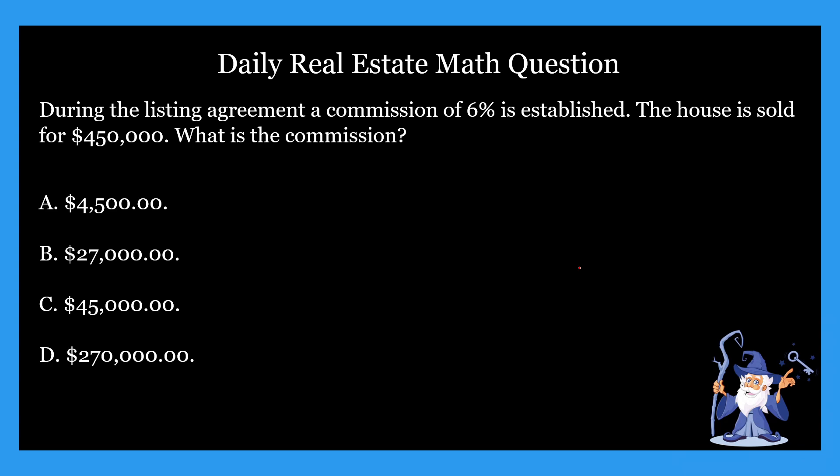All right, let's jump into today's question. It says: during the listing agreement, a commission of 6% is established. The house is sold for $450,000. What is the commission? It gives us four options. A: $4,500. B: $27,000. C: $45,000. D: $270,000. I'm going to give you guys an opportunity and some time to pause here, think it over, and come up with your answer. Go ahead and do that right now.